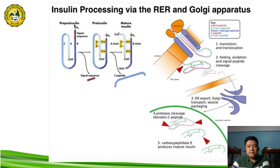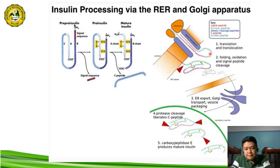The ribosomes generate the preproinsulin, and the generated protein is fed into the lumen of the ER. The majority of the process of conversion of preproinsulin to proinsulin happens in the lumen of the ER. This structure represents the primary structure of our preproinsulin. The first step in its formation is the translation of the mRNA and the translocation of the protein towards the lumen of the endoplasmic reticulum.